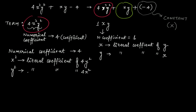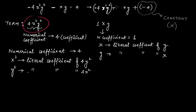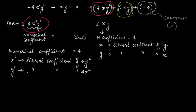Now suppose this algebraic expression was −4x²y² minus xy. We put the minus signs within brackets. We again have three terms. The only difference is that the numerical coefficient becomes minus 4 in this case, and x² is the literal coefficient of −4y², while y² is the literal coefficient of −4x².